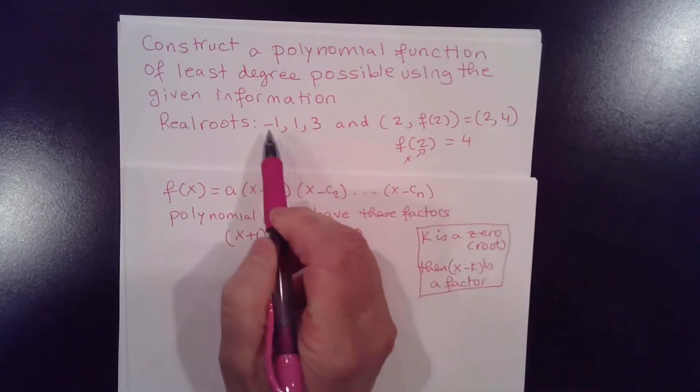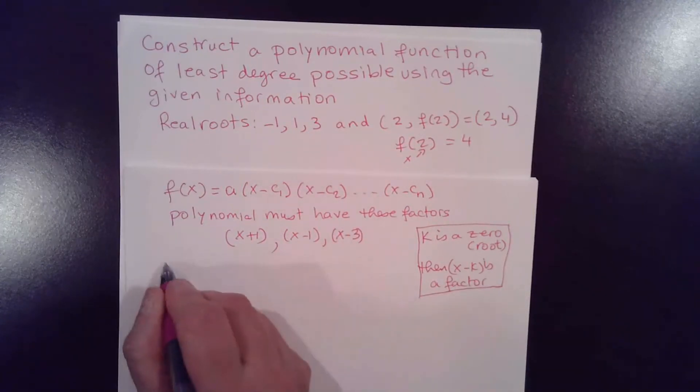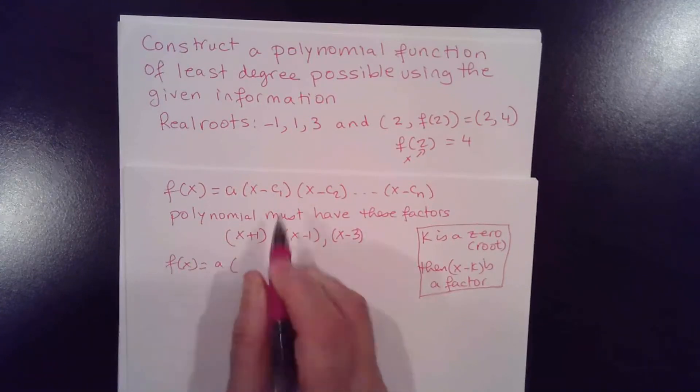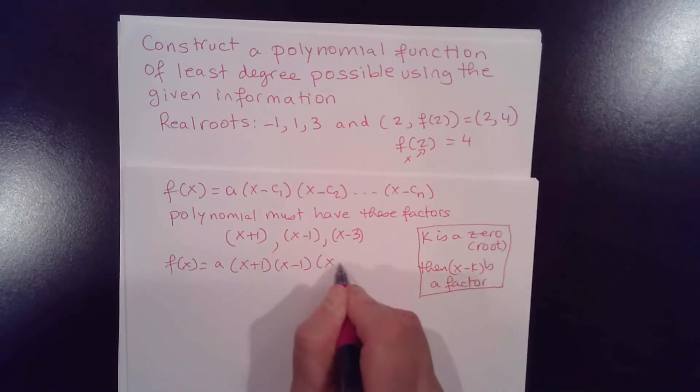So since these are the zeros, these are the factors. So our function becomes a times x plus 1 times x minus 1 times x minus 3.